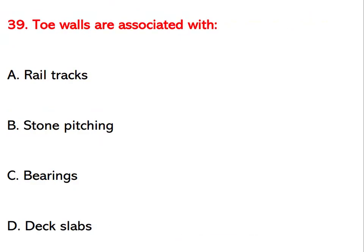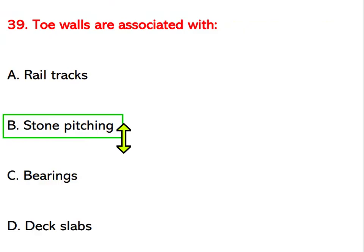Toe walls are associated with which structural element? Options are rail tracks, stone pitching, bearing, or deck slabs. The right answer is stone pitching.